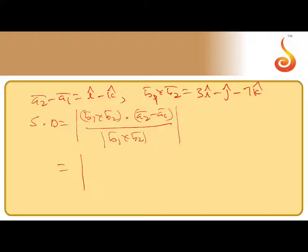That means the numerator is 3 + 0 + 7, which equals 10, divided by √(9 + 1 + 49).